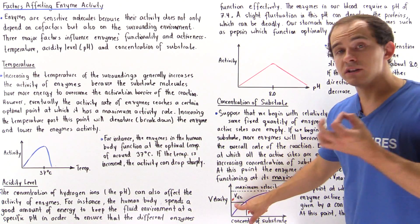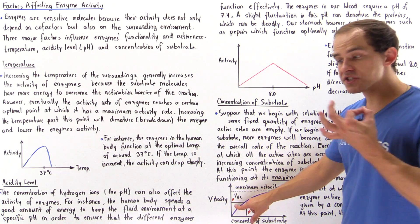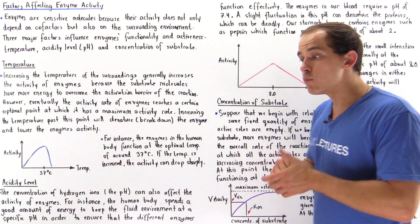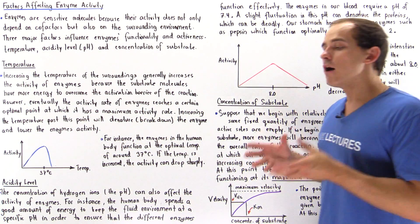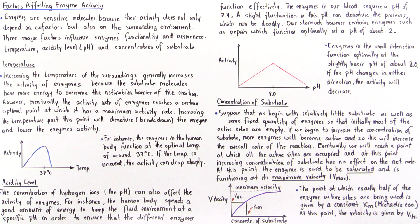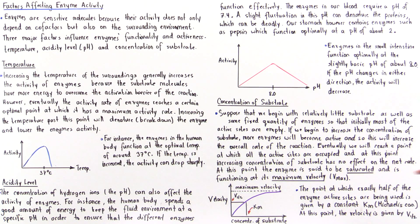At this point, our velocity is given by V½. V½ corresponds to the velocity or rate of activity of the enzyme when exactly half of the active sites of all the enzymes are occupied by our substrate. So the point at which exactly half of the enzyme active sites are occupied is given by the constant Km, the Michaelis constant, and at this point the velocity is given by V½.